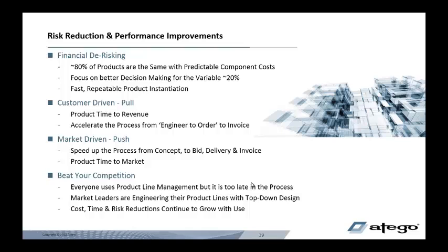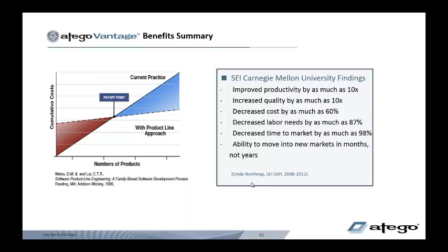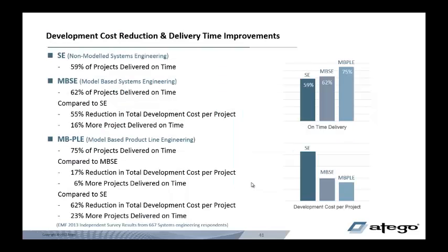Model-based product line engineering is very good at supporting both engineering-to-order and product build approaches to engineering. You can use it to beat your competition to market. Some market research has shown that you can immediately benefit as soon as you get to 2.3 products in a product line, with some radical improvements in productivity, quality, and cost. Compared to basic systems engineering, model-based product line engineering can reduce the total development cost by up to 62%, and 23% more projects are delivered on time.